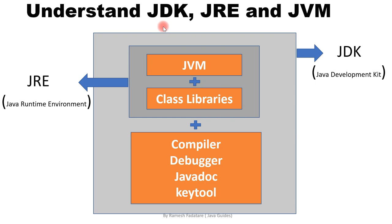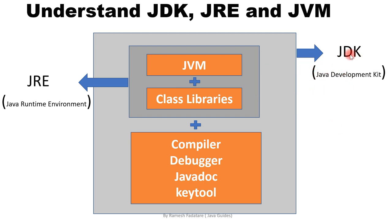Let's first understand what is JDK, JRE, and JVM, and a bit later we will deep dive into the Java installation where you will see what exactly JDK and JRE contain. So first, let's talk about JDK. JDK stands for Java Development Kit. JDK contains a JRE along with a compiler, debugger, javadoc, and keytool. JDK is a software development kit which we use to develop and run Java programs or Java applications.